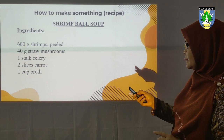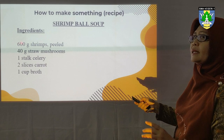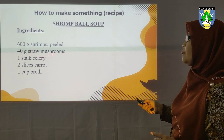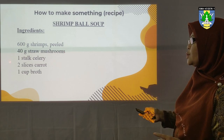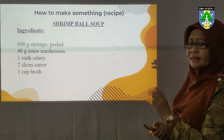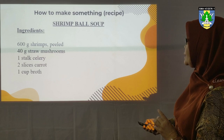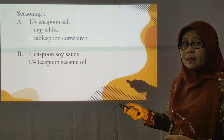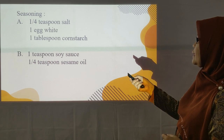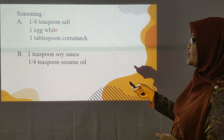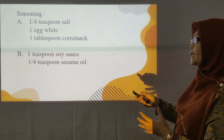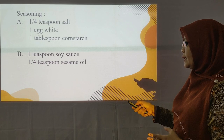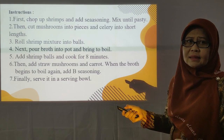The ingredient includes: 600 grams shrimp peeled, 40 grams raw mushrooms, one stalk of celery, two slices of carrots, and one cup of broth. There is also seasoning — still included as ingredient — divided into seasoning A and seasoning B. So we know the aim, the goal, and the ingredient.